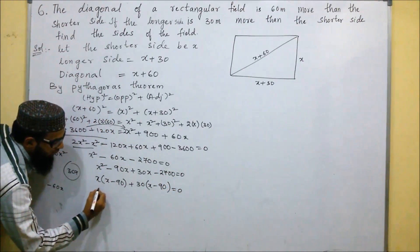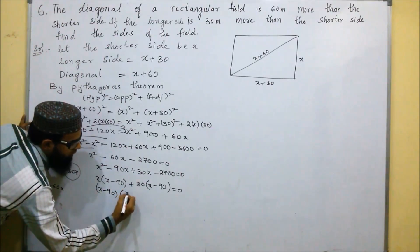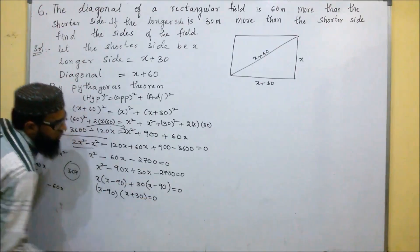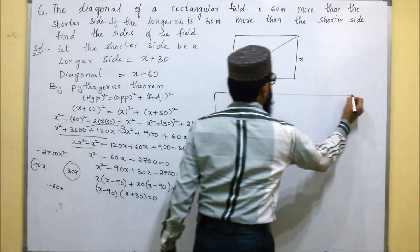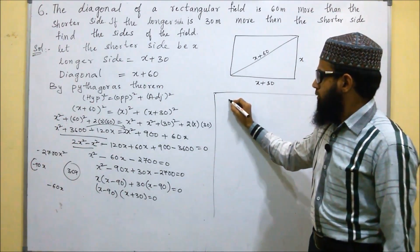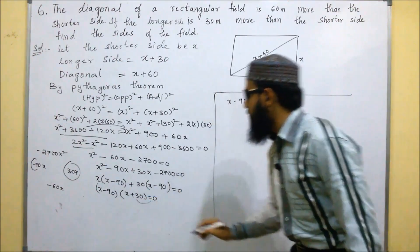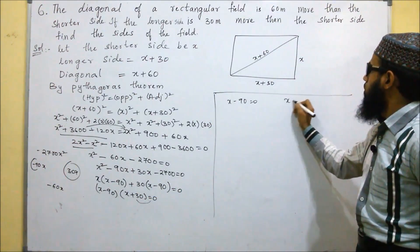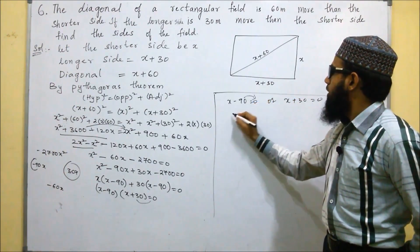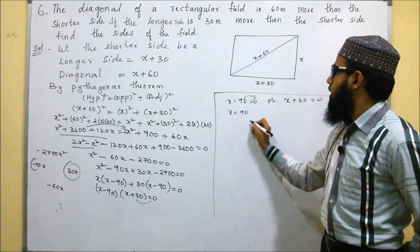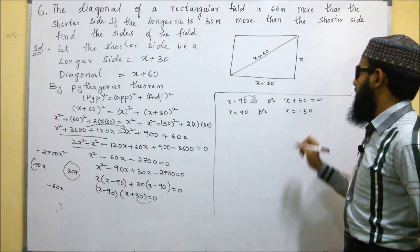Taking (x minus 90) common, we get (x minus 90)(x plus 30) equals 0. So either x minus 90 equals 0, giving x equals 90, or x plus 30 equals 0, giving x equals minus 30. Since x cannot be negative, x equals 90.